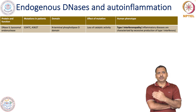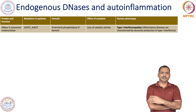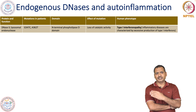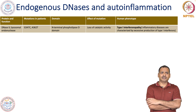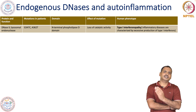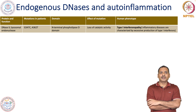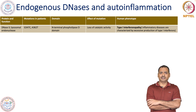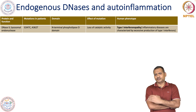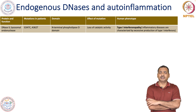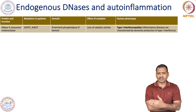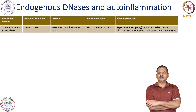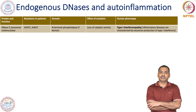There are some mutations associated with DNase 2, as you can see in this slide. G is changed at position 347 (G to C) and A is mutated at position 362. This mutation is present in the N-terminal phospholipase D domain and results in a loss of catalytic activity. The phenotype in humans is type 1 interferonopathy — an inflammatory disease characterized by excessive production of type 1 interferon.